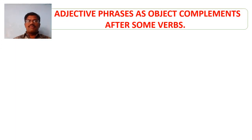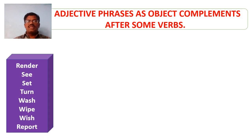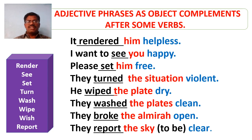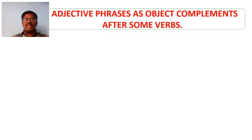Here are some more examples of adjective phrases which can act as object complements after certain verbs. Here is the list of verbs with which adjective phrases can be used as object complements. The verbs are underlined, the adjective phrases used as object complements are marked in blue ink, and the objects are marked in red ink.